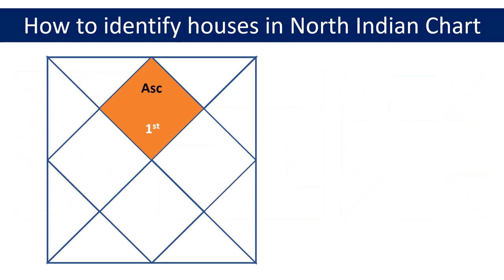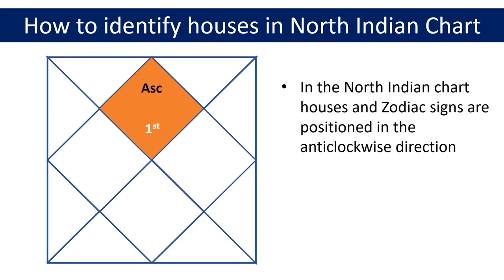Now let's find out where the second house is placed in this chart. In the North Indian chart the houses and zodiac signs or Rashis are positioned in the anti-clockwise direction. So you need to move anti-clockwise to get to the next house. Moving in the direction of the arrow, the second house is now highlighted — it is the triangle to the left of the first house. This will always be the position of the second house in the North Indian chart.